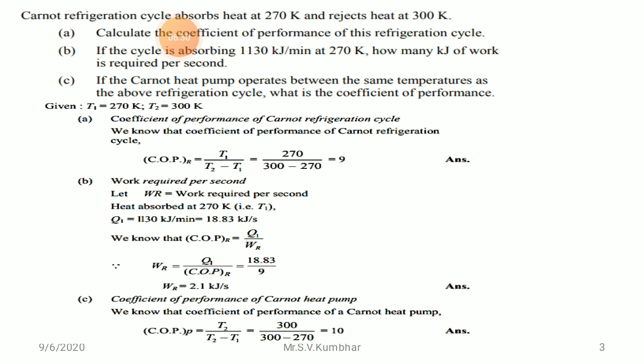For the second question, work required per second is related to heat absorbed. Heat absorbed at TL = 270 K is given as 1,130 kJ per minute = 18.83 kJ per second (dividing by 60). We know COP = Q/W_R, so W_R = Q1 / COP of refrigerator = 18.83 / 9 = 2.1 kJ per second.